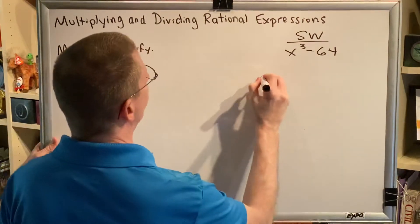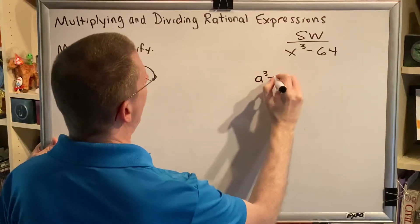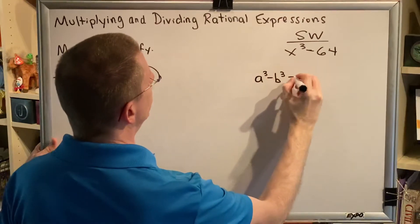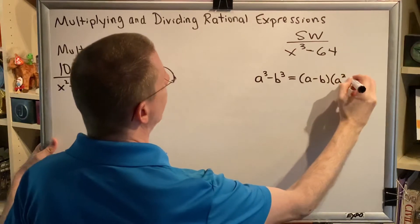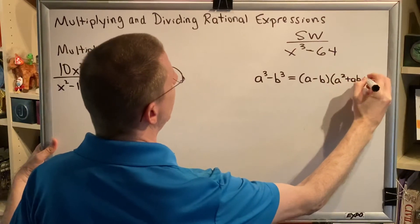We need to remember our factoring formula for a difference of cubes. a³-b³ is equal to the first factor, a-b, times the second factor, a²+ab+b².